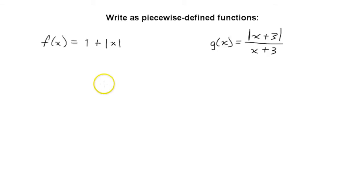In this video we'll be looking at writing absolute value functions as piecewise defined functions. The first function is f of x equals 1 plus the absolute value of x. The process for writing a piecewise defined function from an absolute value function is to investigate what the function looks like for different values of x.